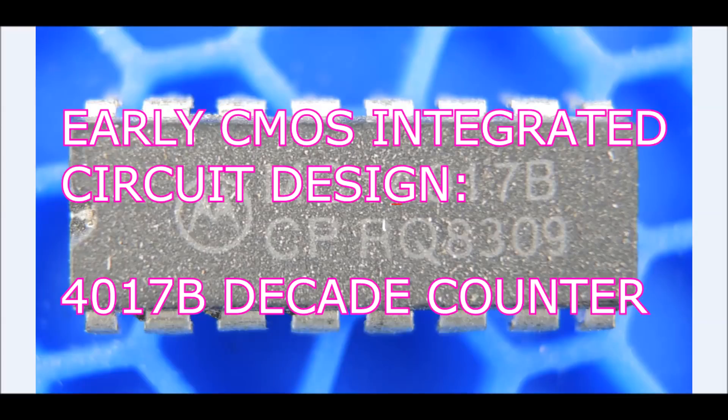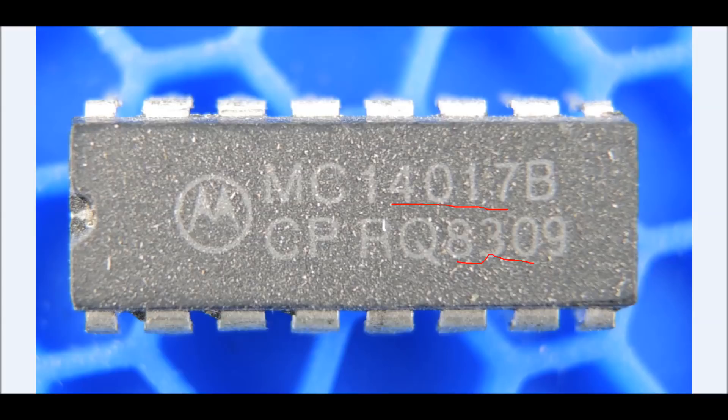Teardown time. This is a 4017. Obviously a pretty old part here. We see a date code of 1983, September, so almost 40 years old.